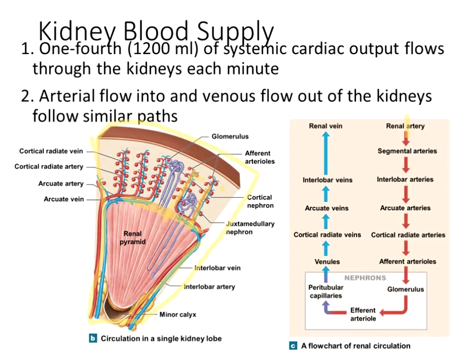Having both an afferent and an efferent arteriole gives two levels of control to slightly manipulate fluid in and out so the pressure in the glomerulus — and therefore filtration rate — is where you want it. After leaving the glomerulus, the efferent arteriole connects to peritubular capillary beds that are involved in oxygen delivery, glucose delivery, fat delivery, and pickup of amino acids, excess glucose, sodium, potassium, and bicarbonate from the interstitial space.